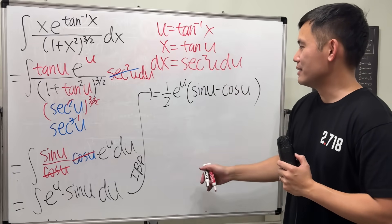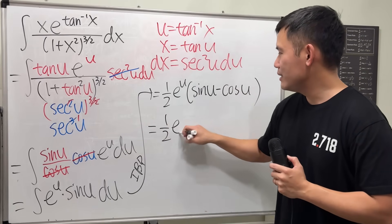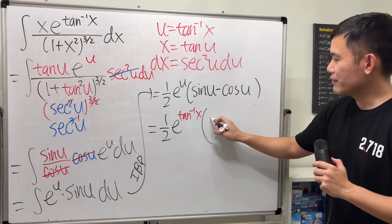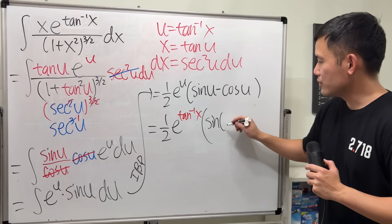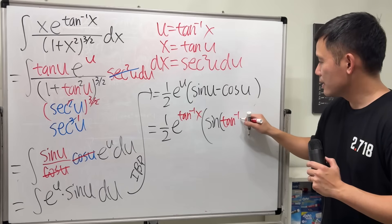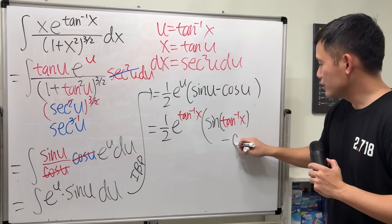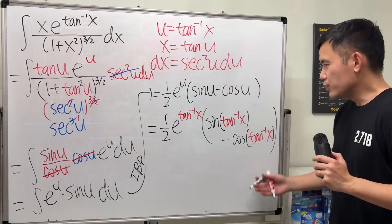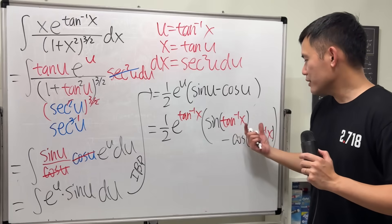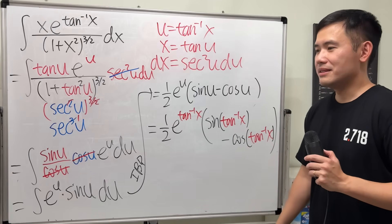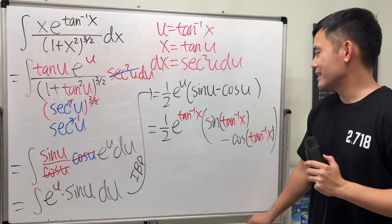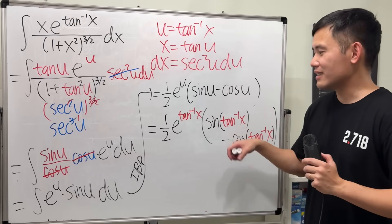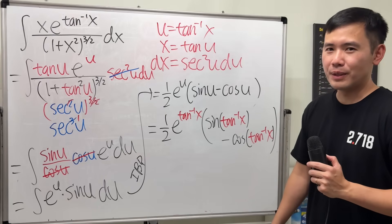Now we just plug back in. We have one-half e to the u, where u is inverse tangent of x, times sine of inverse tangent of x, minus cosine of inverse tangent of x. Technically we are done, however this expression should be simplified further, because it's very intimidating. We can write it in terms of square roots — even if it's still a bit intimidating, we do it anyway.